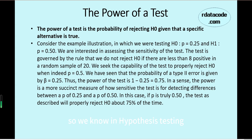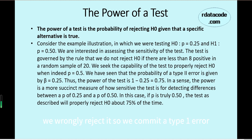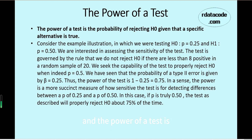In hypothesis testing, people can commit Type 1 or Type 2 errors. Type 1 error is when the null hypothesis H0 is true but we wrongly reject it. On the other side, if H1 is true but we did not reject H0, we commit a Type 2 error. The power of a test is 1 minus Type 2 error, or 1 minus beta.